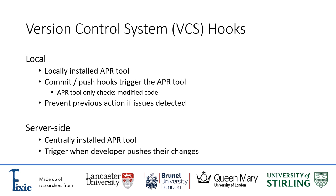The tool will then only need to check the changes that were introduced by the developer. A limitation to this approach could arise when developers don't regularly commit their changes. For example, in the situation where a developer commits their work at the end of the day, the tool may take some time to report whether their code contains any potential faults. If the tool is configured to prevent faulty code from being committed or pushed, the developer may be required to resolve these issues before they leave, which could lead to developers holding off committing their changes until the next day, resulting in loss of work as well as causing frustration amongst developers.